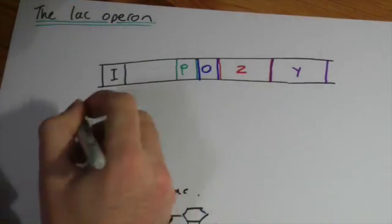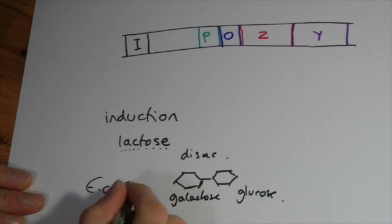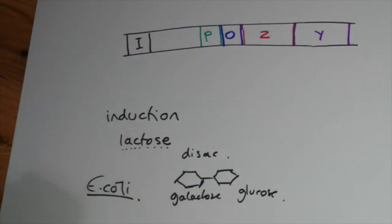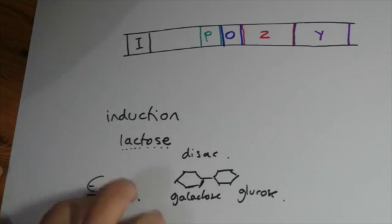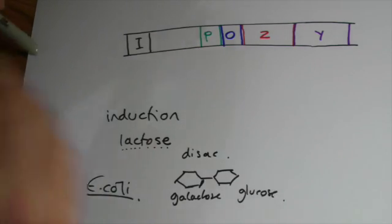The lac operon was first identified in Escherichia coli, which is a bacterium commonly found in your guts, and this is the first organism to have its genome sequenced, so we know a bit about how this works from E. coli, and we use this as a simple model.